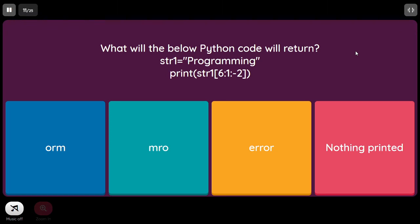What will the below Python code return? str1 equal to 'Programming', print str1[6:1:-2]. Here start (6) is greater than end (1), and when start is greater than end with a negative step, things are displayed in reverse direction. Index 6 is 'M', index 5 is 'A', index 4 is 'R', index 3 is 'G', index 2 is 'o'. From 'M' going in reverse with step -2: 'M' is printed, then 'r', then 'o'. So the output is 'Mro'.